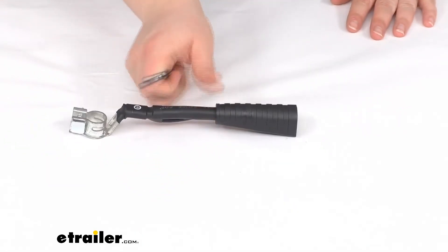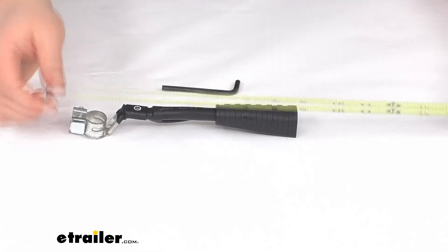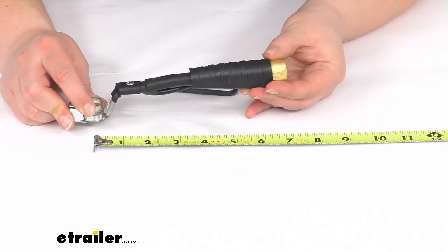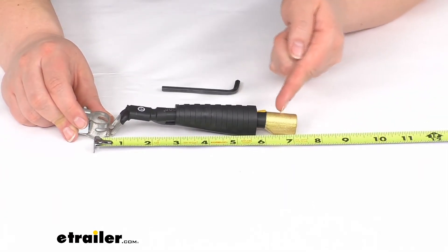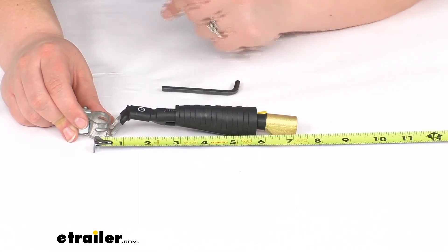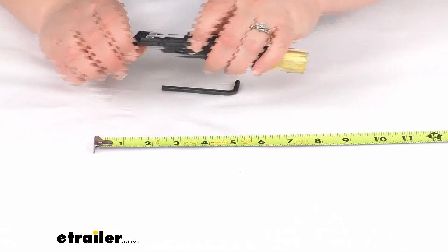As far as the total length on this, or the extension we're going to get out of it, going from the center of where our battery terminal will go to about the center of where our cable is, it's about 6.5 to 7 inches. So it gives you a little bit of an extension on that cable wire.